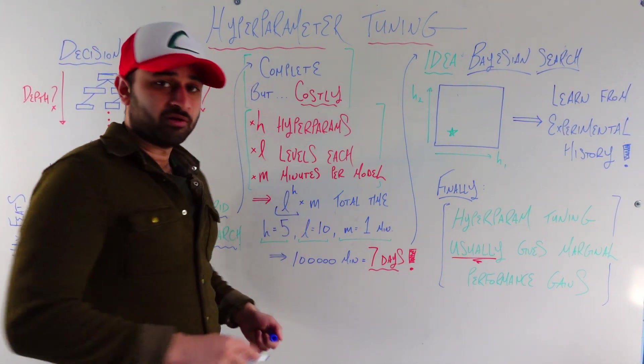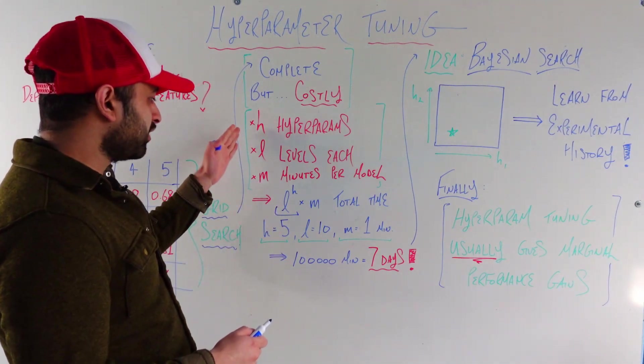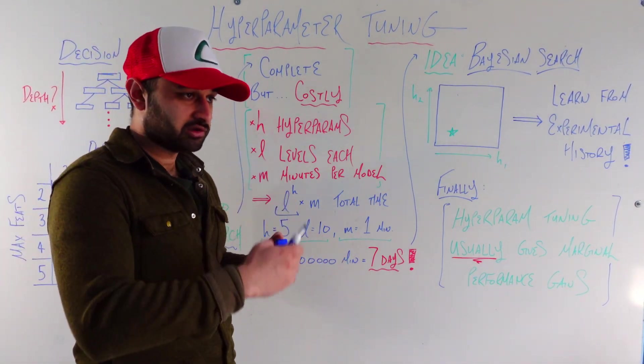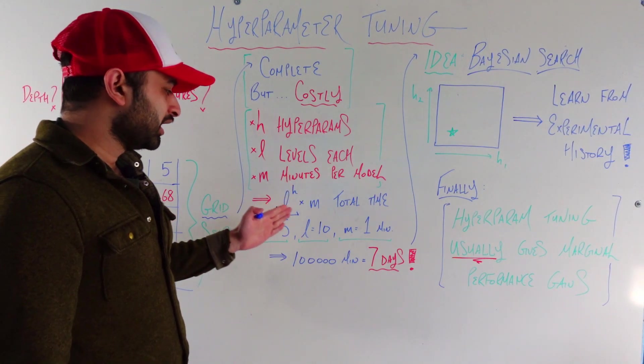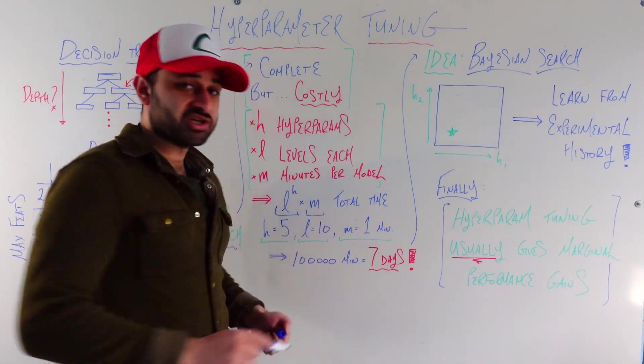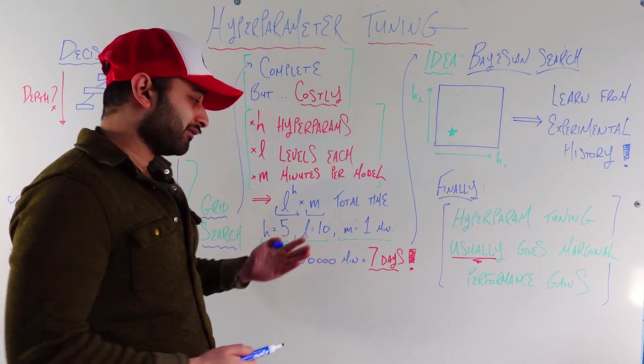This first part here, l to the power of h, is just saying that each of the hyperparameters has l levels, so it's l times l times l h times. And then for each of those we have to train a model, which is going to take on average m minutes, so that's why you have l to the power of h times m.